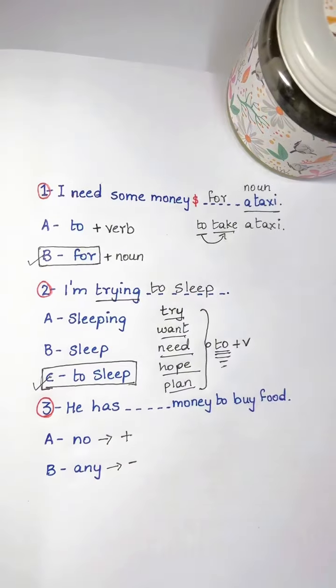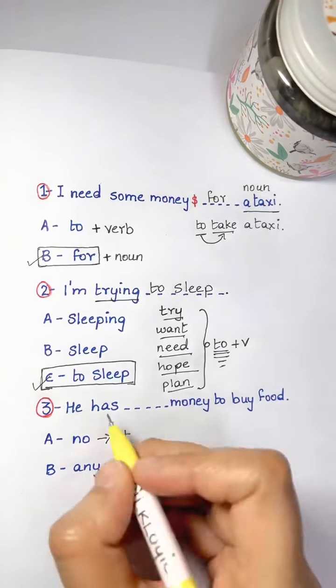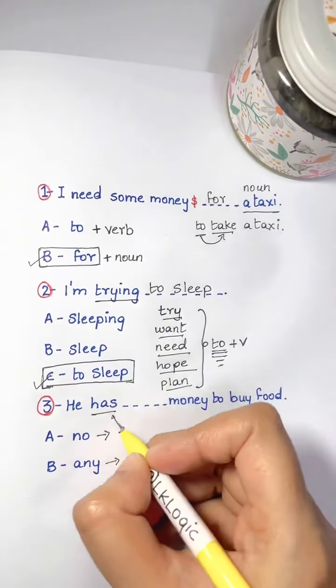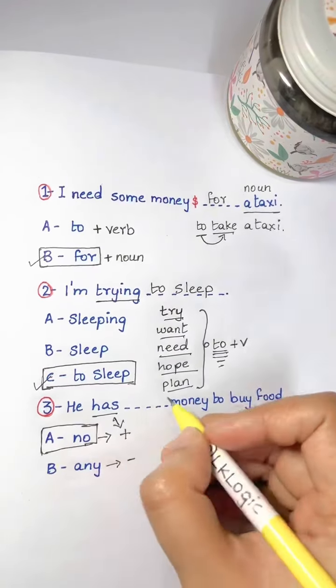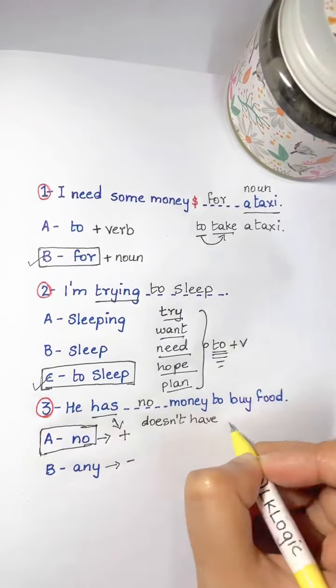Any comes in a negative sentence. When you see not in a sentence, choose any. The verb here is has—positive verb—so we use no. He has no money, and it means he doesn't have any money.